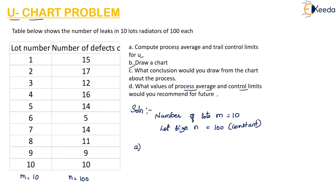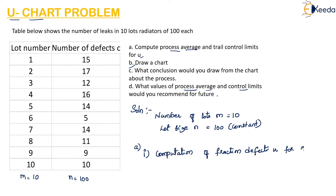First, they are asking us to compute the process average, for which we have to find the fraction defective. The first step is the computation of fraction defect U for each lot, where U equals C divided by n.